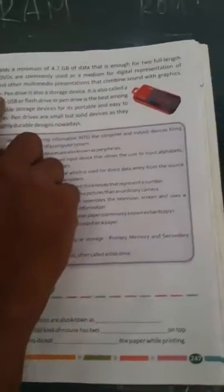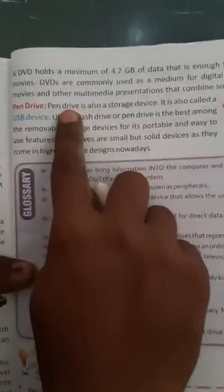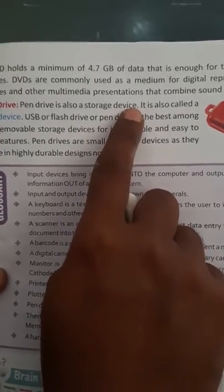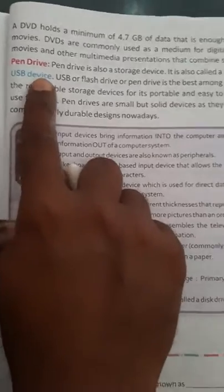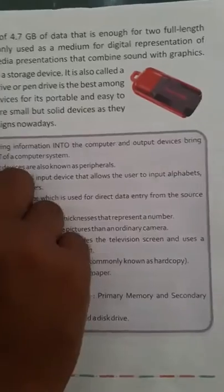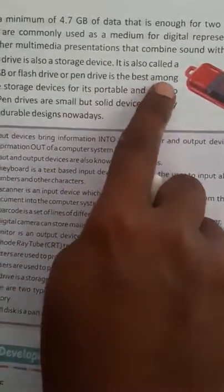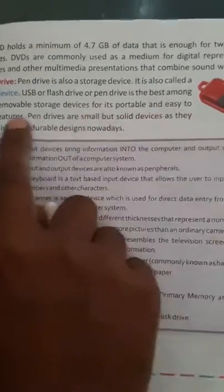Next, another device, pen drive, commonly used device. Pen drive is also a storage device. It is also called USB device or USB drive or pen drive. USB or flash drive or pen drive is the best among the removable storage devices for its portable and easy to use features.